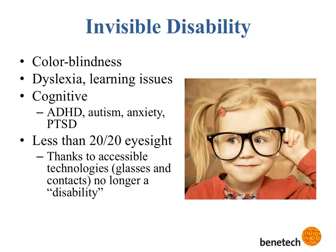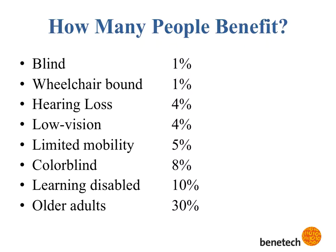Lastly, invisible disabilities — things you aren't even aware someone has unless they tell you. Things like colorblindness, learning issues, anxiety, PTSD. I want to call out eyeglasses: people with less than 20/20 eyesight, we don't even consider that a disability anymore because we've been able to overcome it with technology. When you put this all together, there are very few people who suffer from severe disabilities, but more than half of us live with conditions that can affect our use of technology on a daily basis. This is why we should be paying attention.